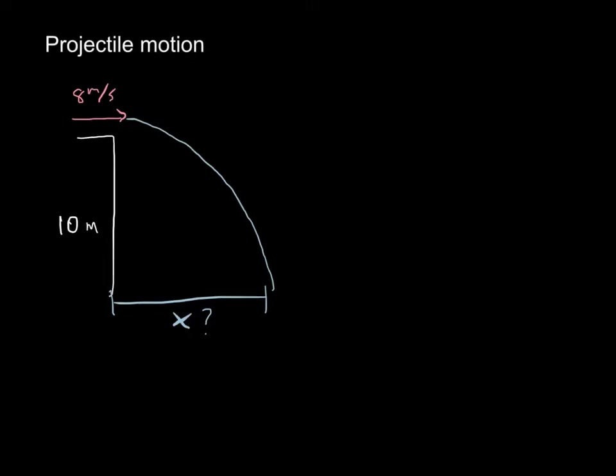The key to solving these problems is to remember that motion acts independently in the horizontal and vertical directions. We have to take each into account independently. In the y direction, we treat it just like a regular falling object. In the x direction, we treat it like an object moving horizontally, and we keep those separate from each other.